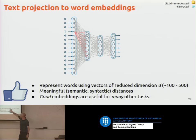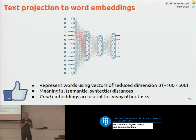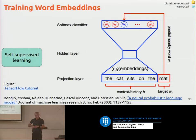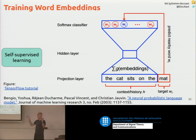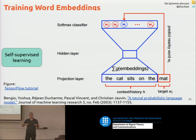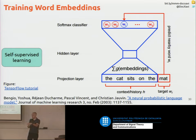Word embeddings are vectors of reduced dimensions — typically 100 or 500 — that have meaningful semantic and syntactic distances and are used as representations for other tasks. In order to obtain word embeddings, several techniques have been proposed. Basically, they always follow the idea that you have a large amount of text — maybe from Wikipedia or news articles — and you exploit the relations that words have in this text to learn these embeddings in a self-supervised way. There's nobody annotating anything; you exploit the fact that words appear in similar contexts.